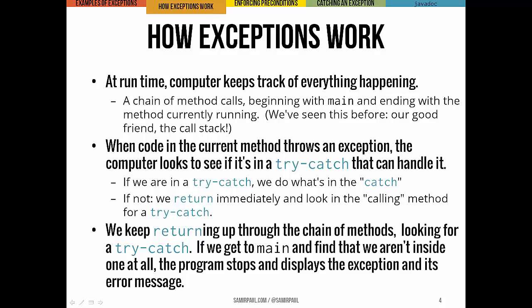We'll learn more about this in just a second. If it doesn't find a try-catch statement, then we're going to return out immediately to the next method up in the call stack. In that next method, we're going to look immediately around where we are to see if there's a try-catch statement. If we don't find one, then we're going to move up to that method's caller and look again. We're going to do this until we either find a try-catch or until we get all the way up to main. If no try-catch statement is found anywhere in this entire process, then the computer is going to stop the program and show you a trace of all the method calls, the type of exception, and what the error message was.